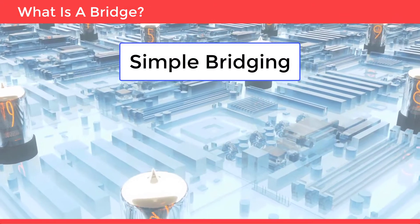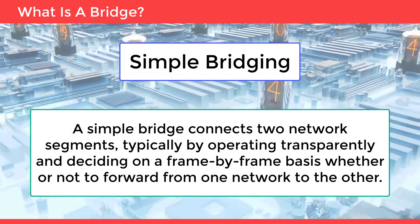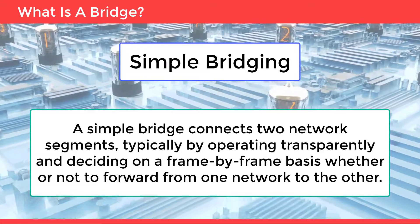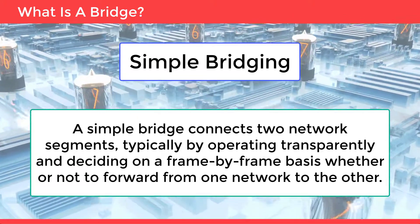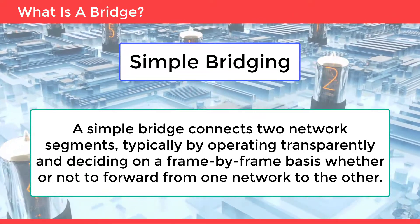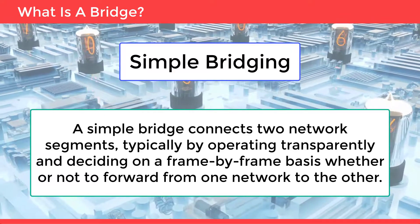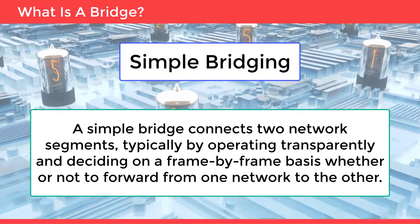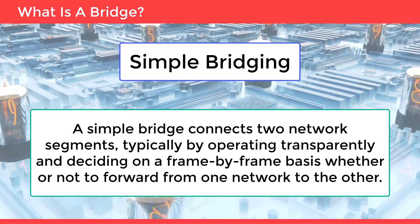Simple bridging: a simple bridge connects two network segments, typically by operating transparently and deciding on a frame by frame basis whether or not to forward traffic from one network to the other.